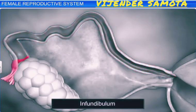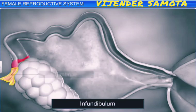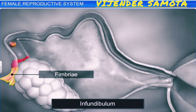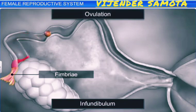The infundibulum is a dilated funnel close to the ovary, and its edges are surrounded by finger-like projections called the fimbriae. They help collect and push the ovum into the oviduct after ovulation.